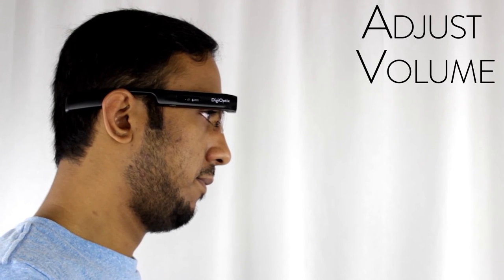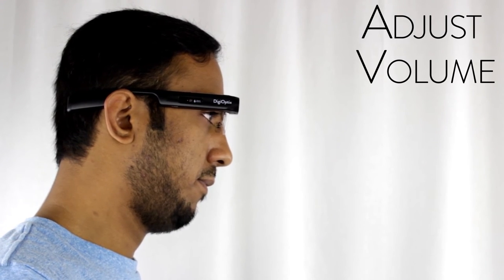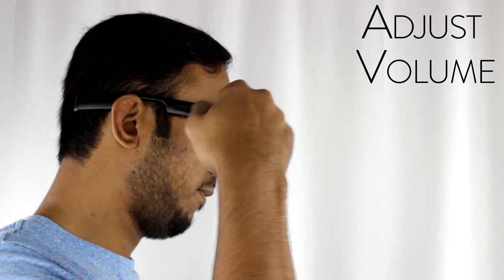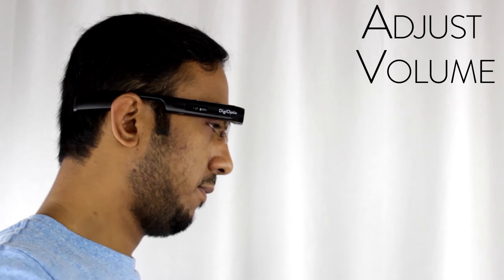To adjust volume with Bluetooth turned on and your headset connected, make a clockwise circle around the sensor. To decrease volume, make a counter-clockwise motion.